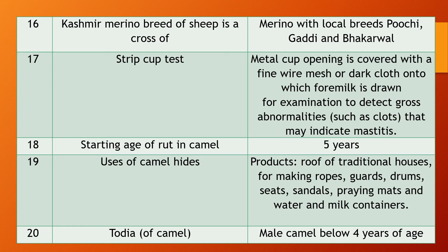Question 17. Important question — Strip cup test. What is that? It is generally performed by the gawala in the milk shed. The strip cup test contains a metal cup whose opening is covered with a very fine wire mesh or a dark cloth, onto which the foremilk is drawn and examined to detect gross abnormalities such as presence of clots, shreds, threads, etc., and to detect the presence of mastitis or not. Important question.